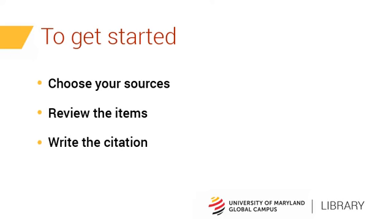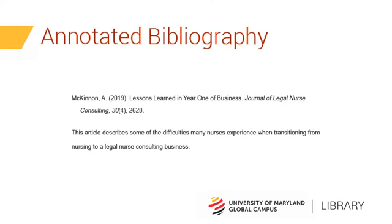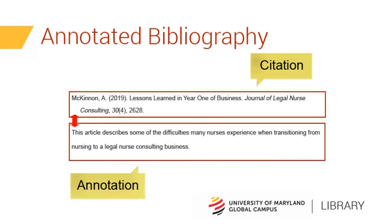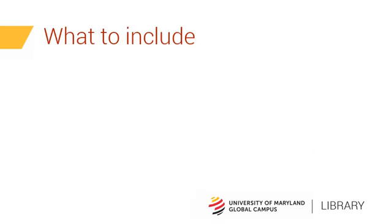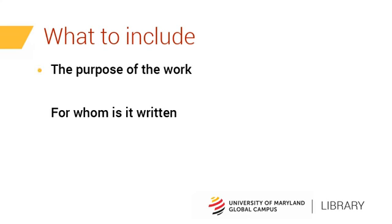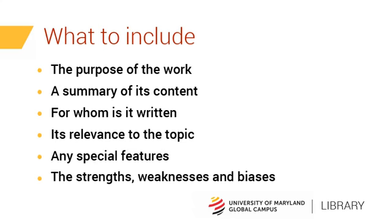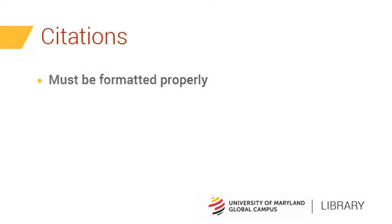Write the citation and annotation. When writing your annotation, the complete citation should always come first, then the annotation with a space between them. Depending on the type of annotated bibliography you are writing, you will want to include the purpose of the work, a summary of its content, for what type of audience the work is written, its relevance to the topic, any special or unique features about the material, and the strengths, weaknesses, or biases in the material. Annotated bibliographies must be properly formatted for your citation style, though they may be arranged alphabetically or chronologically.